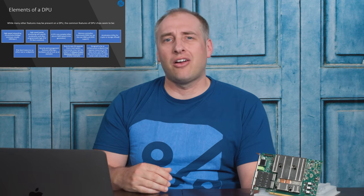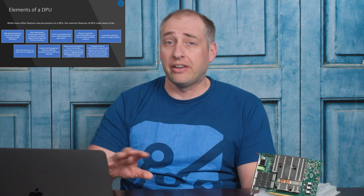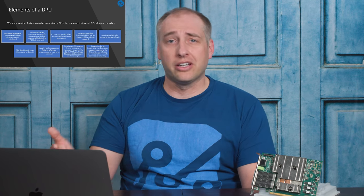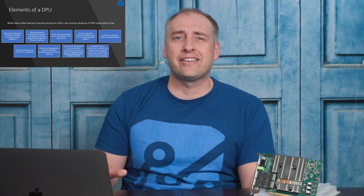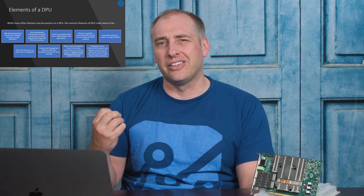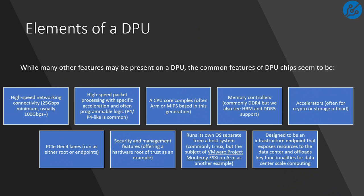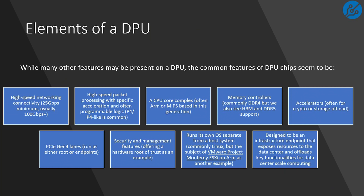So let's get into what is a DPU and what makes a DPU a DPU. We looked at all the publicly available DPUs, did a compare and contrast versus other segments, and distilled the key elements. The first is really high-speed network connectivity — usually at least 25-gig Ethernet, for DPUs designed to go into servers and expose things like the network fabric and storage, with higher-end versions also available. You'll typically have high-speed packet processing, because as you get to higher speeds you need those offloads, and you may also have some programmability in your pipeline.